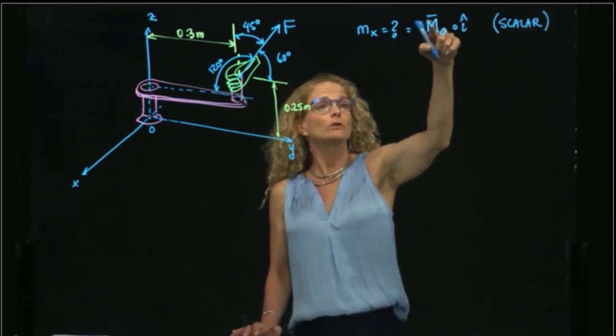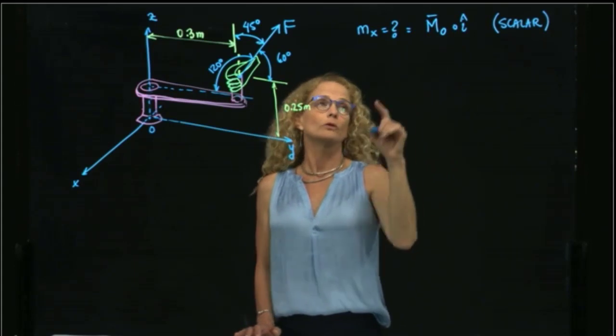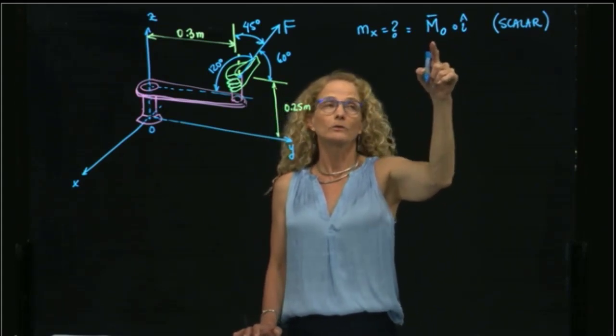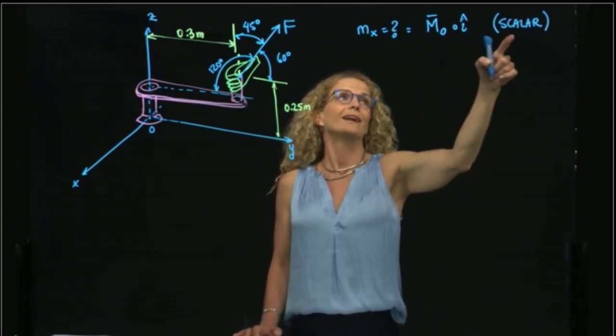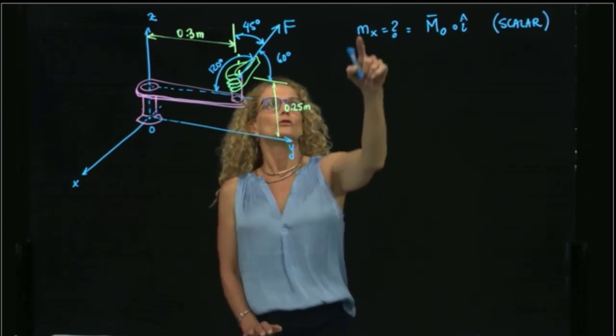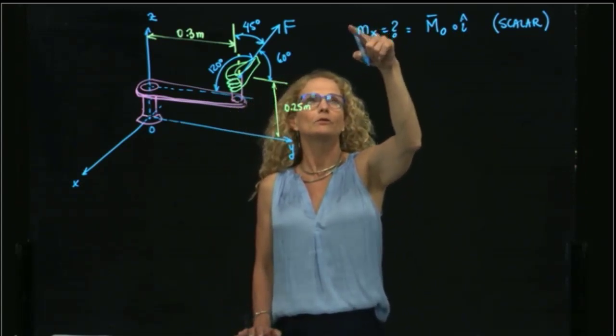And this is a scalar quantity. This is a vector, this is a vector, but as you remember, when you multiply two vectors dot product, you get a scalar quantity. So this doesn't have a line right here because this is a scalar.